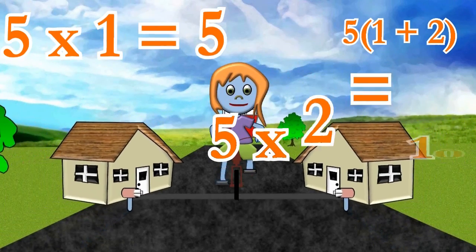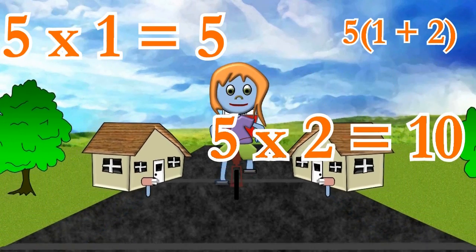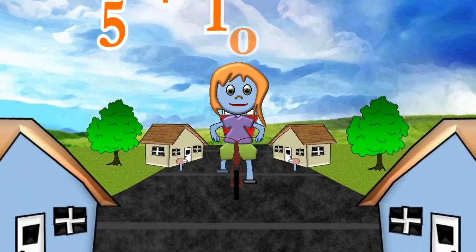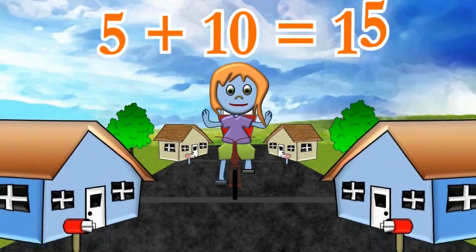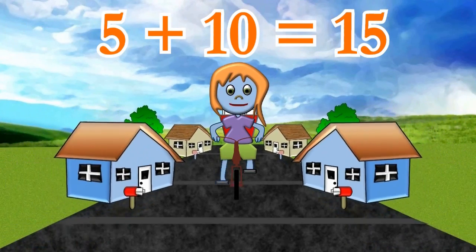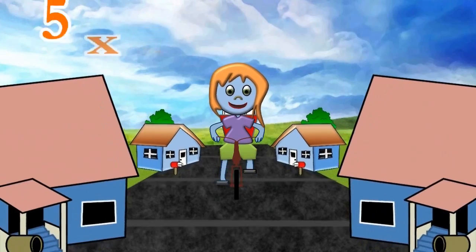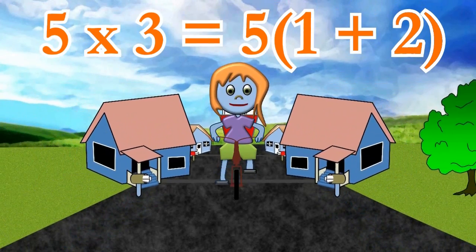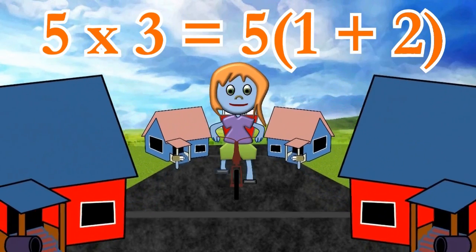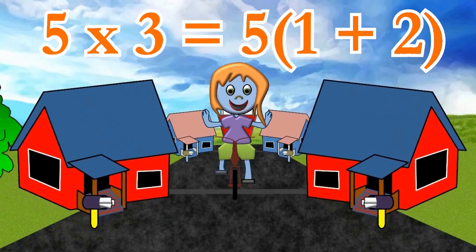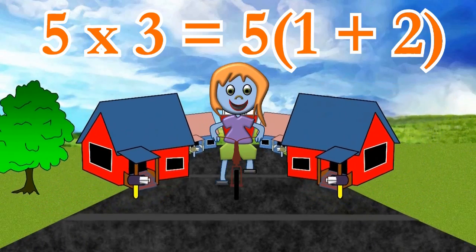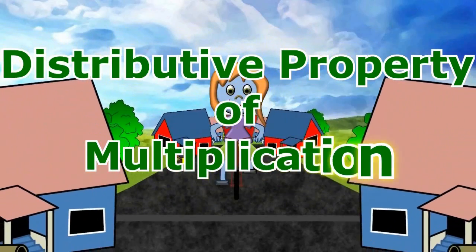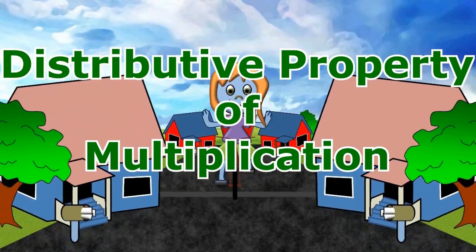5 times 1 is 5, and 5 times 2 is 10. And if we add them together, we get the exact same answer: 15. The Distributive Property of Multiplication is very useful in math, because it allows us to separate numbers or variables and makes our problems easier to solve.